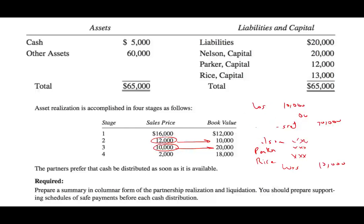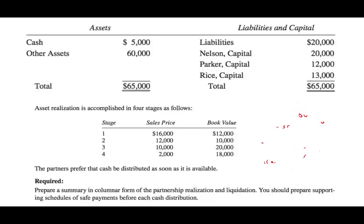They made four sales in total — a gain, a gain, a loss, and a big loss. The partners prefer the cash to be distributed as soon as it's available. The task is to prepare the summary schedule of partner realization and liquidation, along with a supporting safe payment schedule.